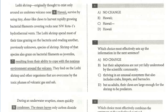The Lohi shrimp, originally thought to exist only around an undersea volcano near Hawaii, survived by using tiny shear-like claws to harvest rapidly growing bacterial filaments covering rocks near NW Rota 1's hydrothermal vents. Right away, we've seen this before — this is just extra information, a non-essential clause. You always want to look for punctuation. You can use a comma on either side as long as it's consistent, you can use an M-dash, which is what we see here, or you could use parentheses. If it's not underlined, it's correct. So we're setting this off with the M-dash; we need another M-dash. The answer is C.